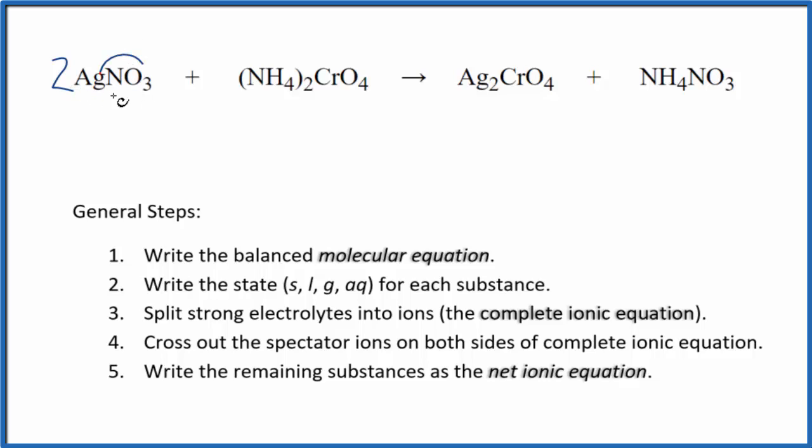That balances the silver atoms, but now I have two nitrates and just one here. So I'm going to put a two over here. Balances the nitrates, now I have two ammonium ions, but I have two ammonium ions here. So that's fine. And then I have a chromate ion here and a chromate ion here. So this is the balanced molecular equation.